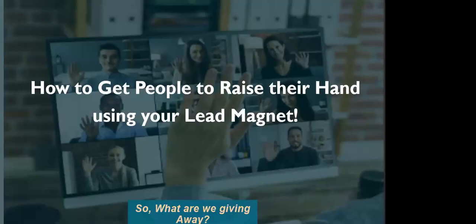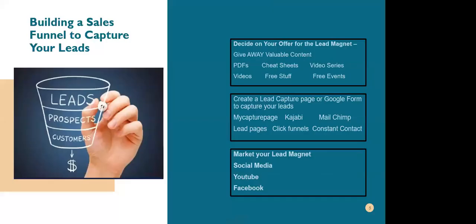We are going to be talking about, following up on our series, how to get people to raise their hand using your lead magnet. We have shifted on to our lead magnet from our last course. So what are you giving away? Last week you had an assignment to come up with some things you want to give away. We want to turn our leads and prospects into customers and business partners for those here to market an affiliate marketing program.